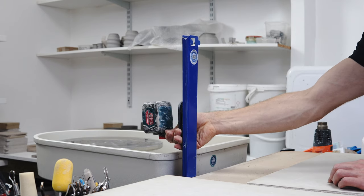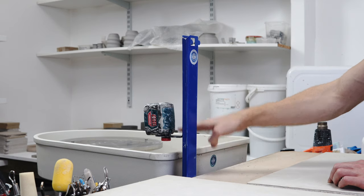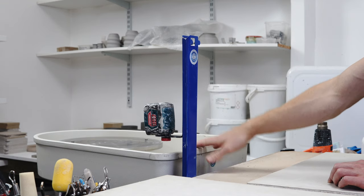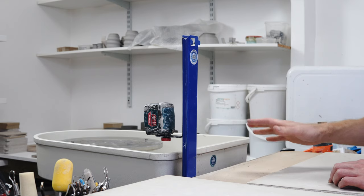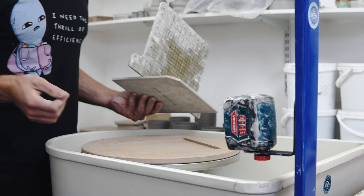Realistically for mugs and things, level with the wheel head up to there is all you really need. Next I'll show you how I zero it and then I'll throw some pieces with it.